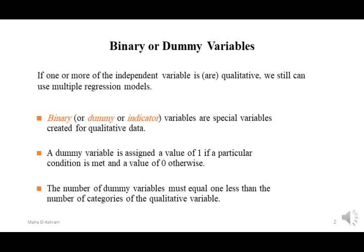In this case, we still have a way to deal with this situation in order to represent the relation using multiple regression. We will use what we call binary, dummy, or indicator variables. Binary or dummy variables are used to represent a qualitative variable in a multiple regression model. The rule is: a dummy variable takes one of two values — either one or zero. The number of dummy variables introduced equals the number of categories of the categorical variable minus one.